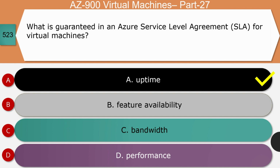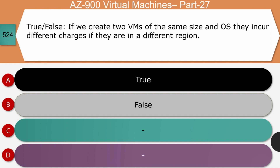The SLA for virtual machines guarantees uptime. The amount of uptime guaranteed depends on factors such as whether the VMs are in an availability set or availability zone, whether there is more than one VM, and the distribution of VMs — whether it is a single VM or multiple. Uptime is the right answer.